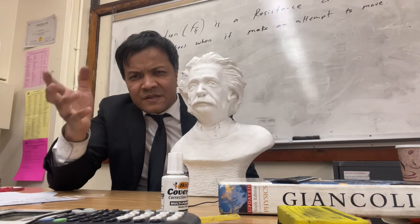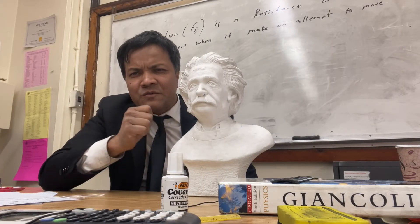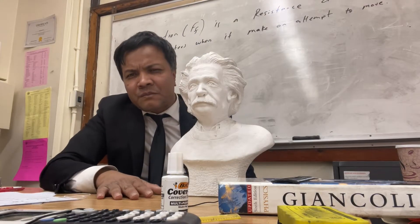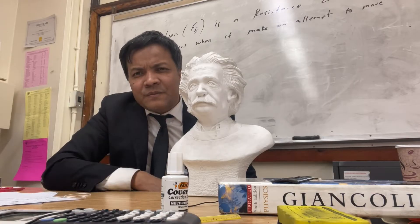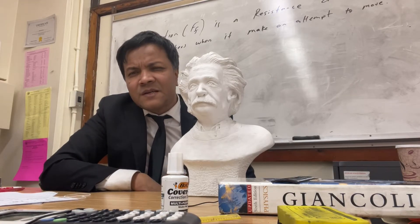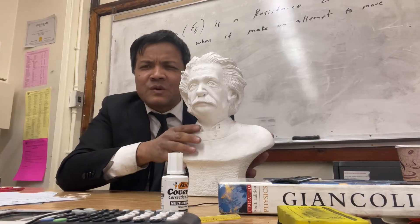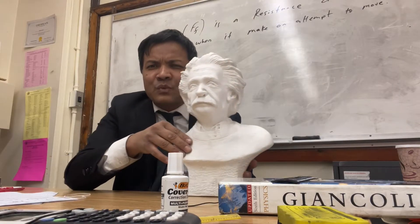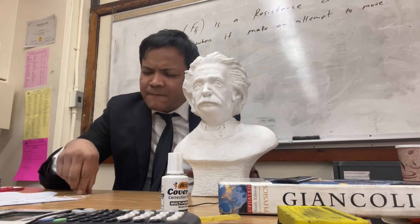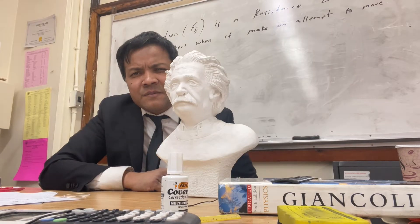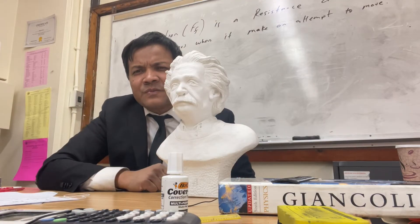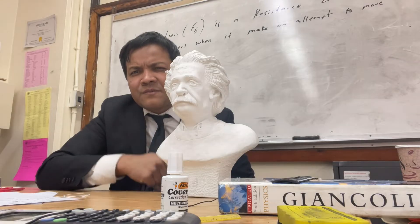Static friction and kinetic friction — the static coefficient is always bigger than the kinetic coefficient. For example, if the static coefficient for this table is 0.4, then the kinetic coefficient is 0.3. That is because the static coefficient applies when the object is at rest, and the kinetic coefficient applies when the object is already in motion. Now, how many forces are acting on Albert Einstein right now? Two forces — because the object is at rest, nobody is pulling or pushing. Two forces: the force of gravity and the normal force.